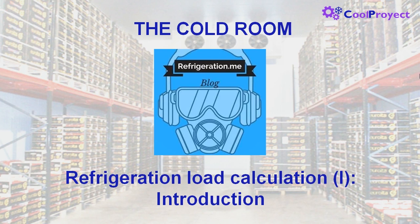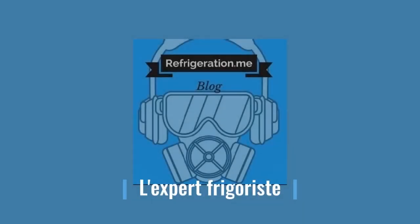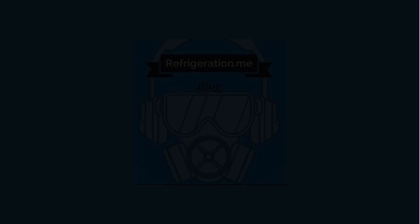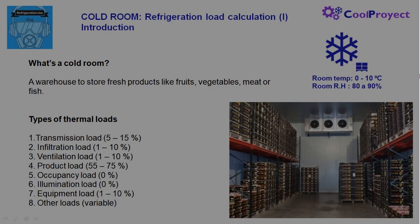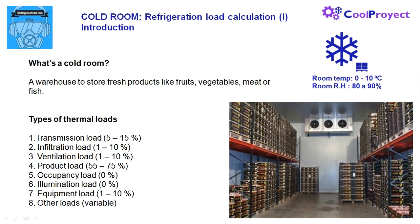Let's start with a brief introduction. First of all, what's a cold room? Well, a cold room is our house to store fresh products like fruits, vegetables, meat, or fish. The temperature in this room is normally between 0 and 10 degrees.